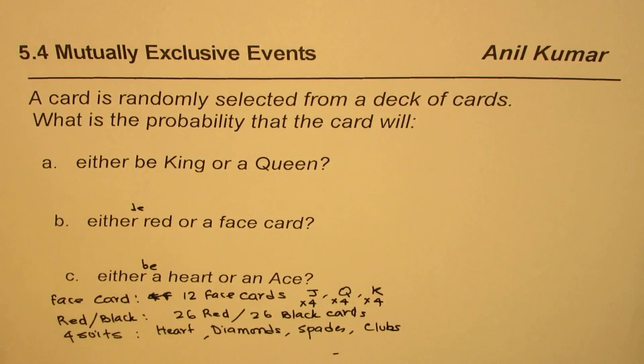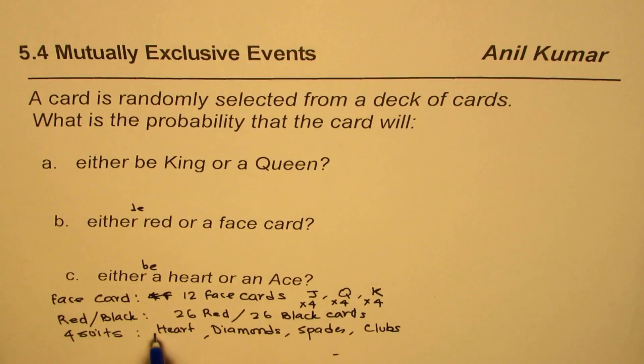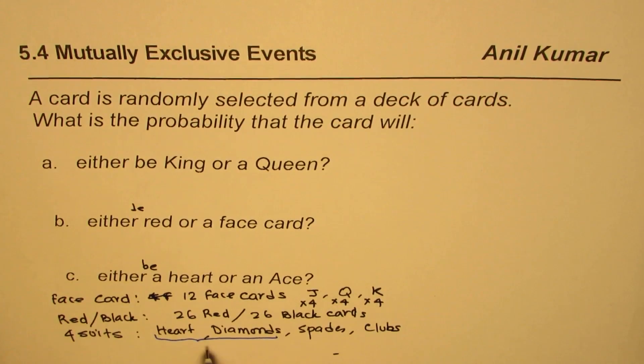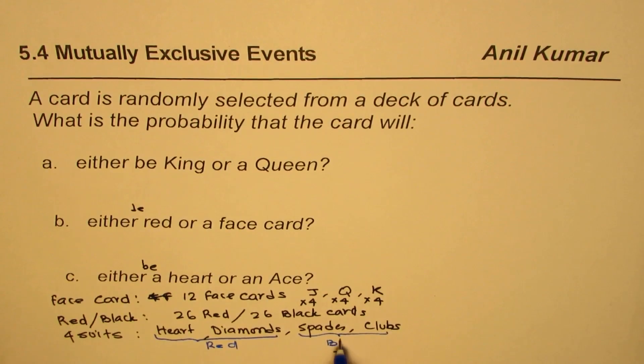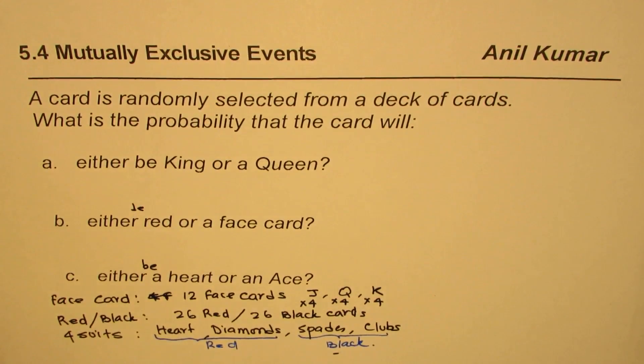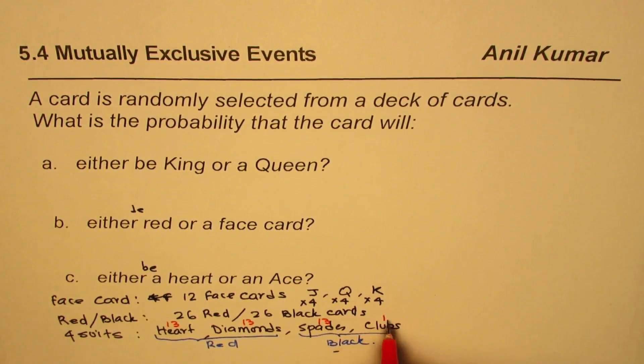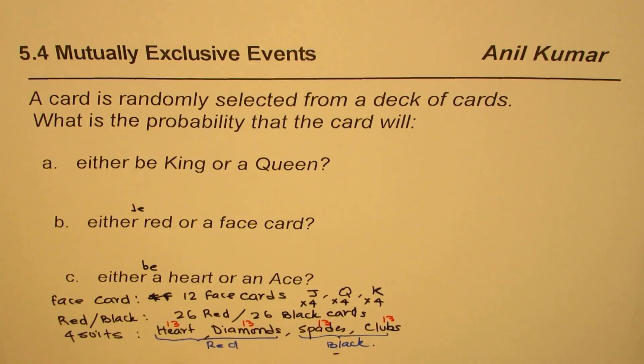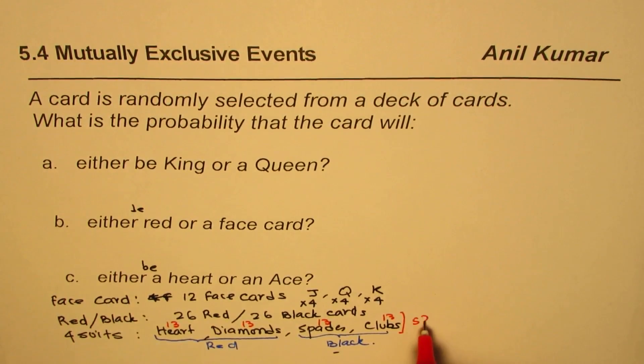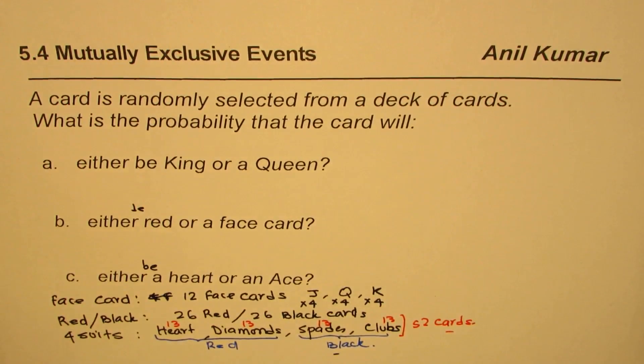Heart and diamond are red, and these are black. We have 13 of each, so we have 13 hearts, 13 diamonds, 13 spades, and 13 clubs. That makes on the whole 52 cards, the standard deck.